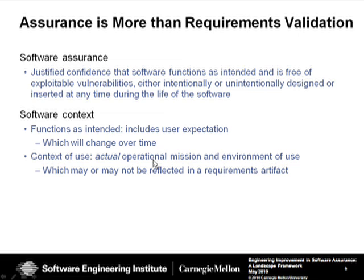Assurance itself is a very complex concept and difficult to define. We've run across many definitions, which is why we wanted to clarify ours. We're focusing on software assurance as a justified confidence that the software functions as intended and will continue to function as intended, free of exploitable vulnerabilities — whether intentionally or unintentionally designed or inserted into the software at any point during the lifecycle. The key elements are: functions as intended, which must include user expectations and be considered over time, since software is used for a long range of time and frequently changes during its sustainment cycle.